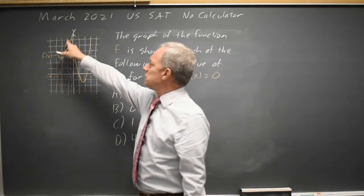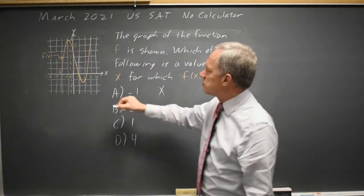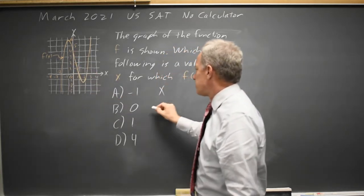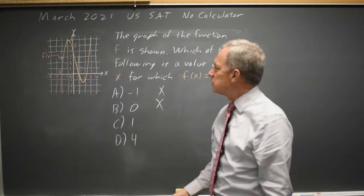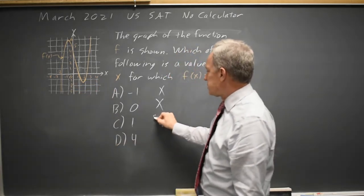f of negative 1 is a y value of approximately 6, so that's not correct. f of 0 is a y value of perhaps 4, that's not 0, so that's not correct. f of 1 appears to be 0, so that would be our answer.